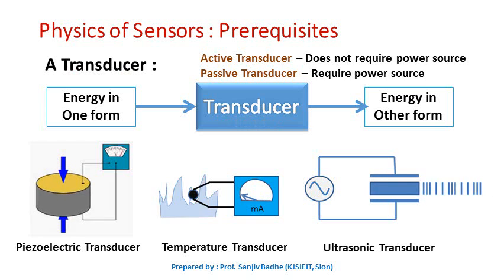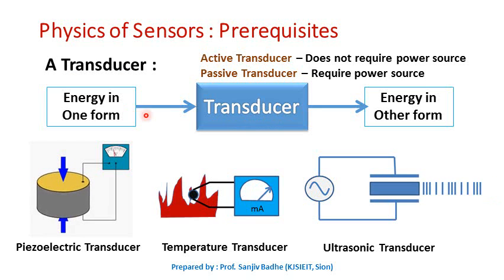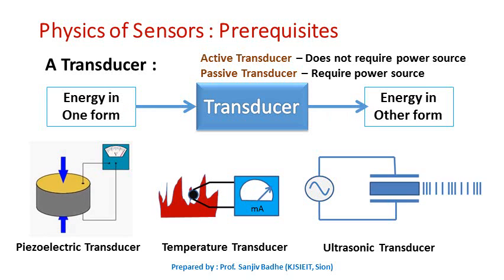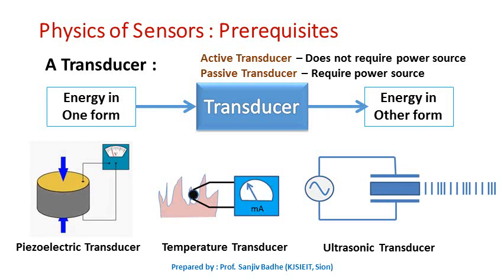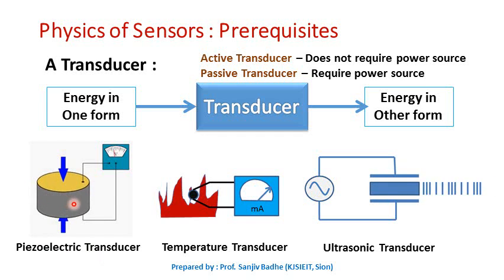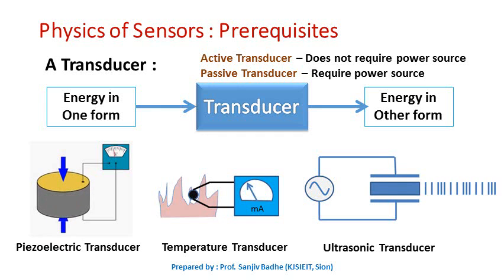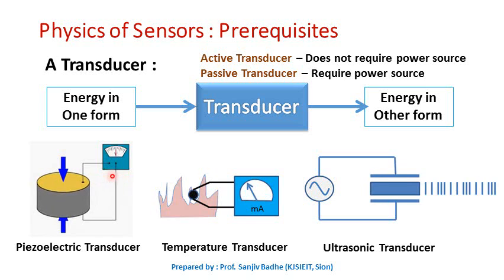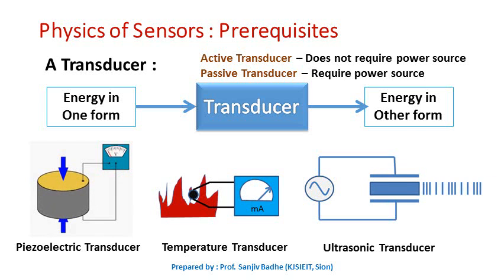A transducer is a device that converts energy in one form to energy in some other form. Here we have some examples of transducers. This is a piezoelectric transducer which takes energy in mechanical form and converts it into an equivalent amount of electrical energy.